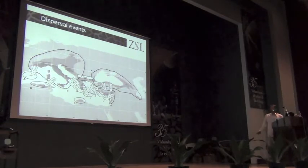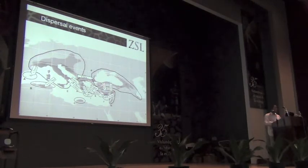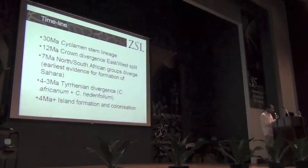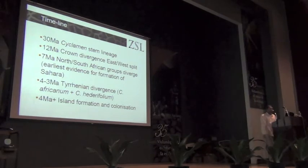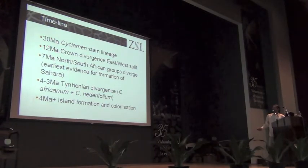And here are our dispersal events, with different timescales associated with them. We've got our timeline — 30 million years for our system and stem lineage, and then the crown node when the species started to diversify at about 12 million years.